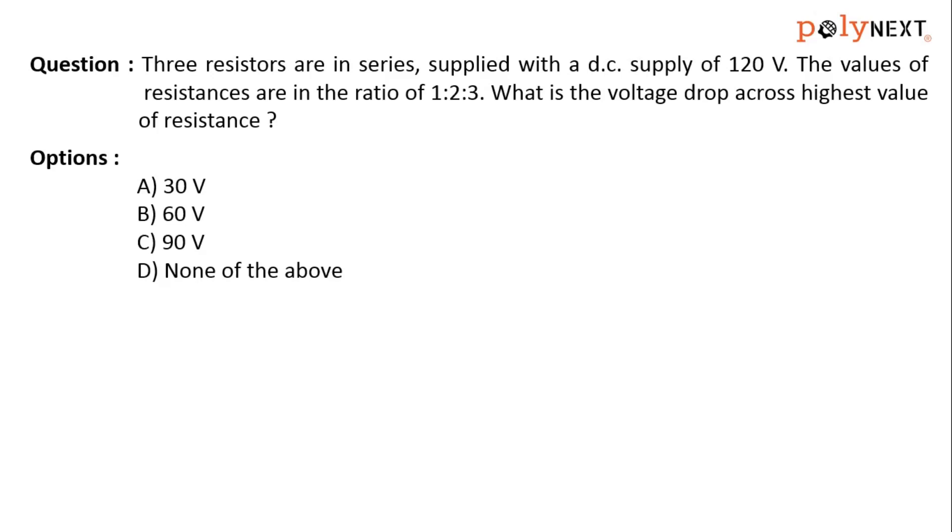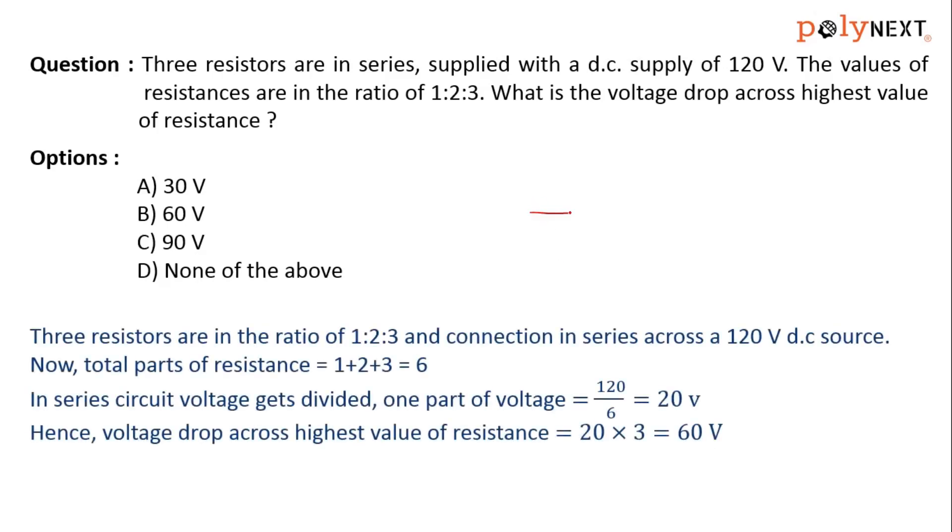Options are 30 volts, 60 volts, 90 volts, and none of the above. Now you can observe that we have three resistors but no ohmic values are mentioned. Rather, it is given the ratio of 1:2:3.